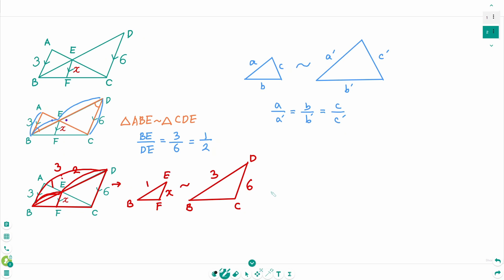Then we can think of it as 1 over x equals 3 over 6. Then cross multiply, 3x equals 6. Then divide by 3 on each side. x equals 2.